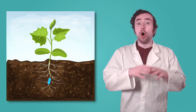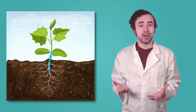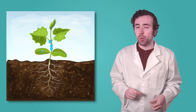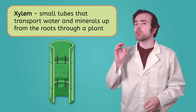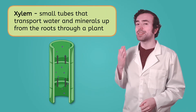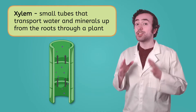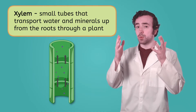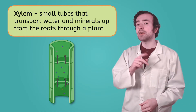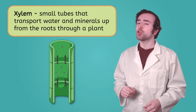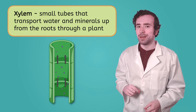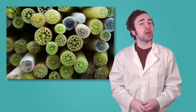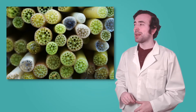Water can't just stay in the roots — all the cells in a plant need water to function. The water has to be transported throughout the plant. That's where the xylem comes in. The xylem are small tubes inside the stem of a plant that transport water up from the roots and throughout the plant. Water evaporating from a plant's leaves creates pressure that sucks the water up, just like when you suck on a straw. So next time you cut a flower or snap a twig, keep an eye out for these tubes.